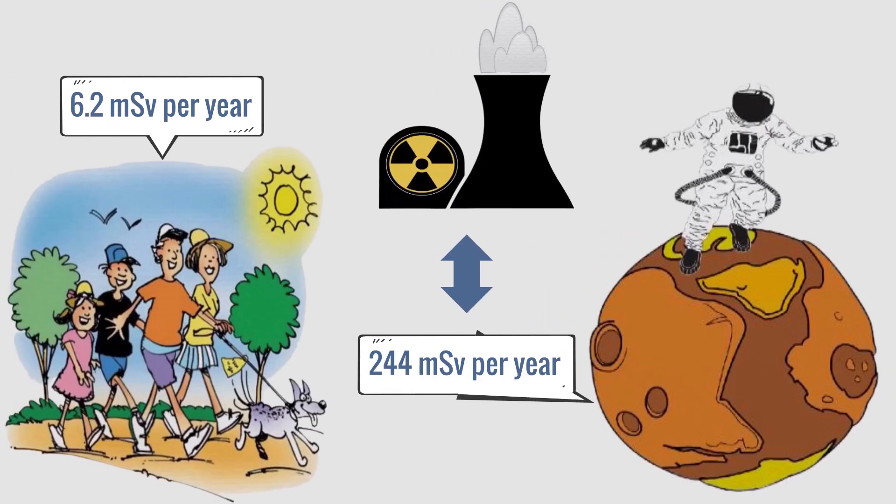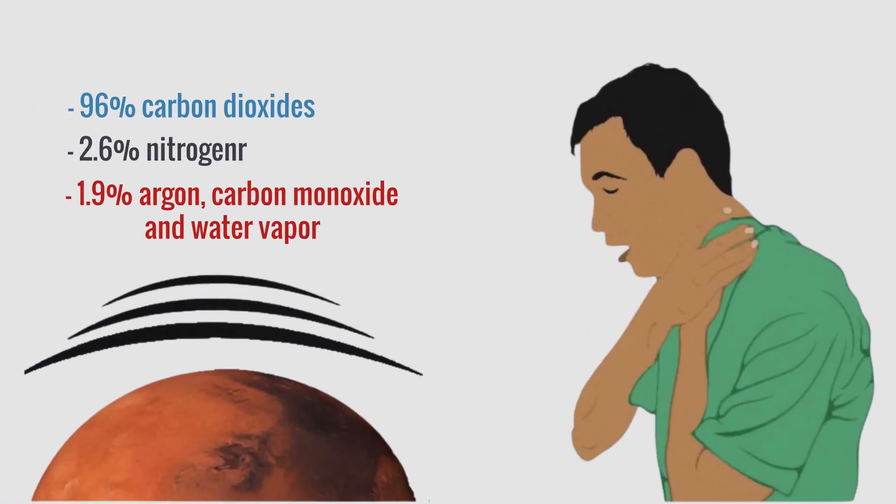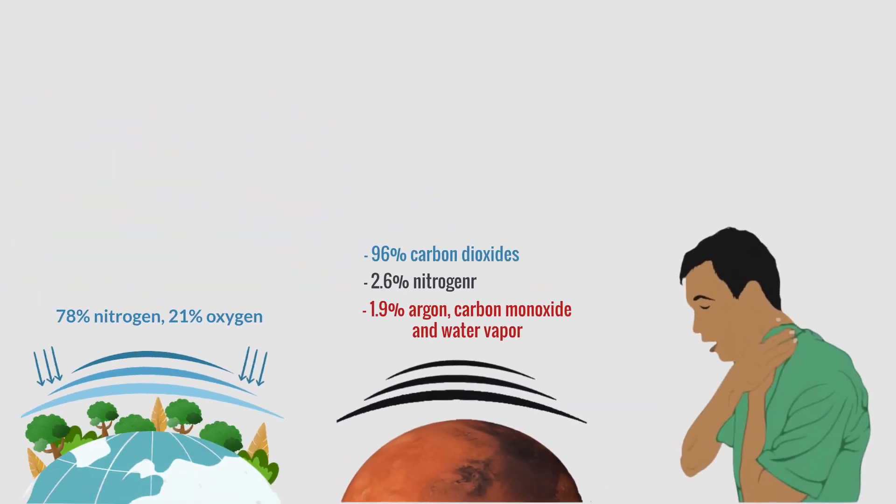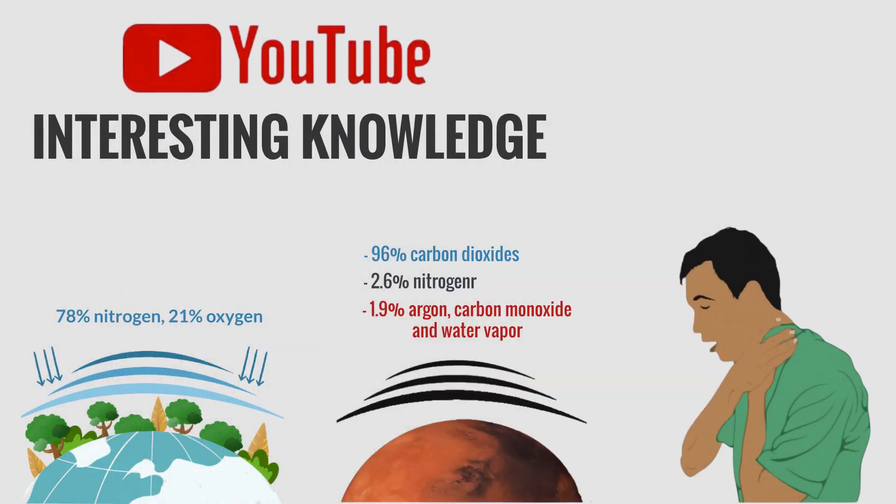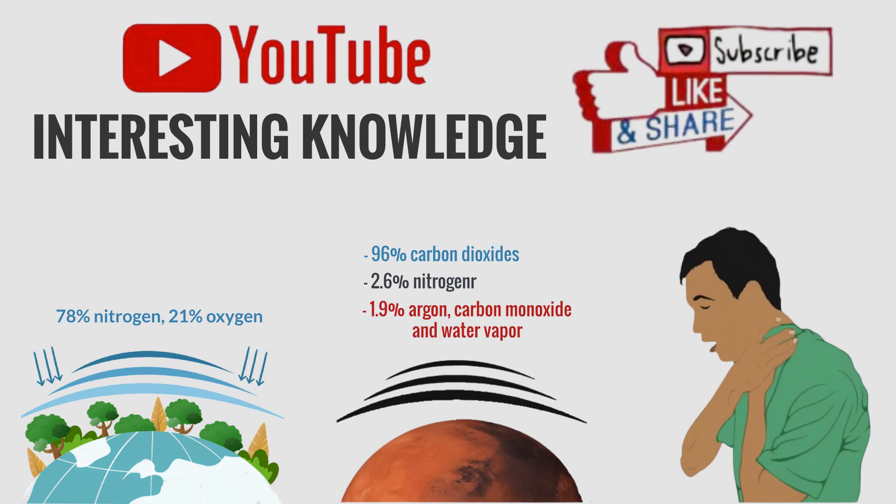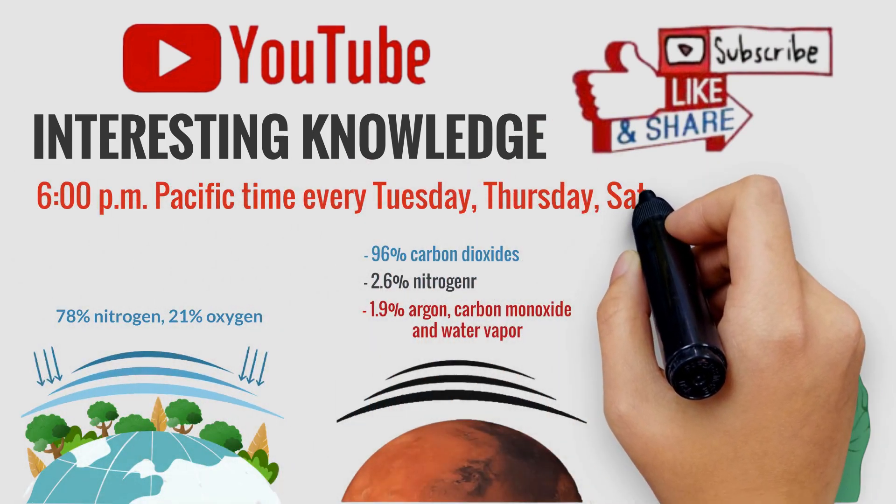Thus, in general, life on Mars is possible, but it is 10,000 times more difficult than improving the habitat on Earth. Why do we destroy the Earth, destroy nature, and then spend mountains of money to find a way to live on an extremely inhospitable planet? Really hard to understand. Thank you for watching the video, goodbye, and see you again.